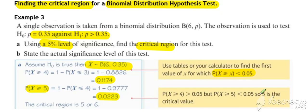So 5 is the critical value, so the critical region is X greater than or equal to 5, which for this binomial is just 5 or 6.